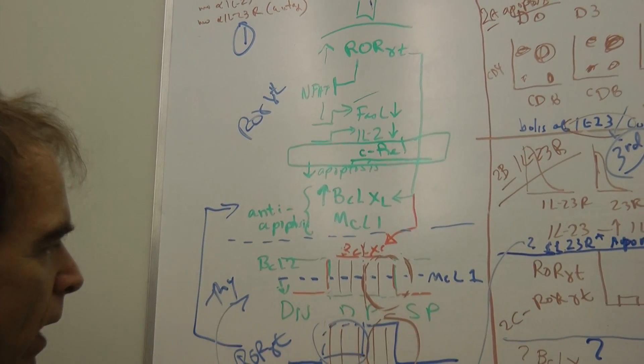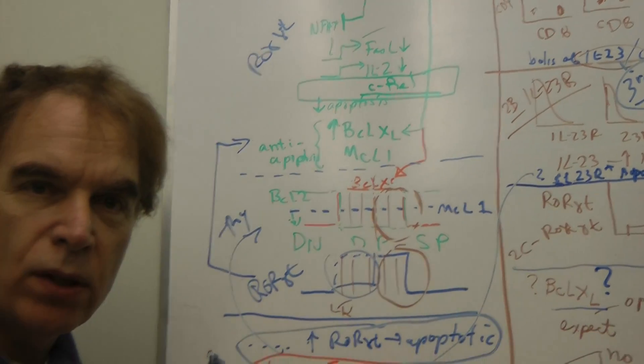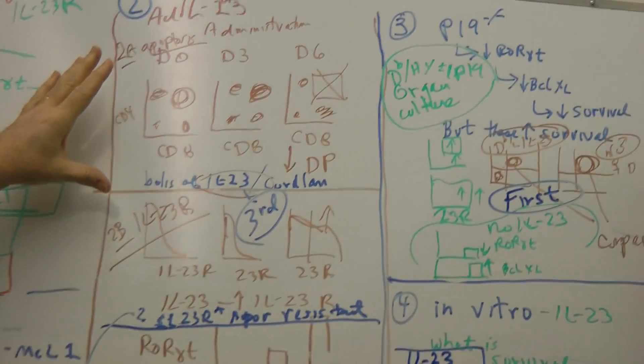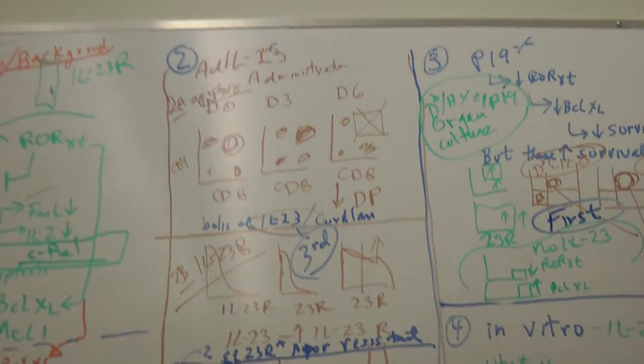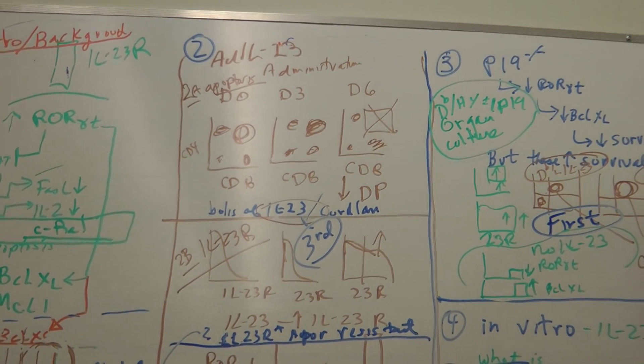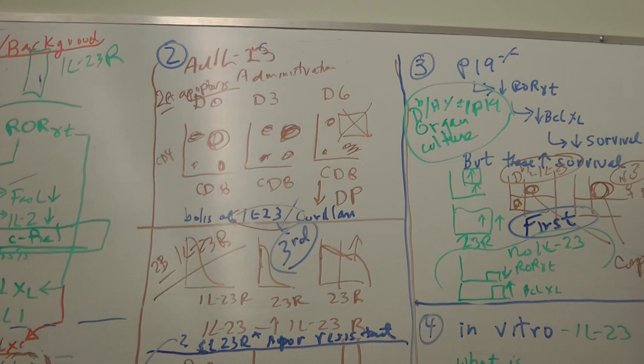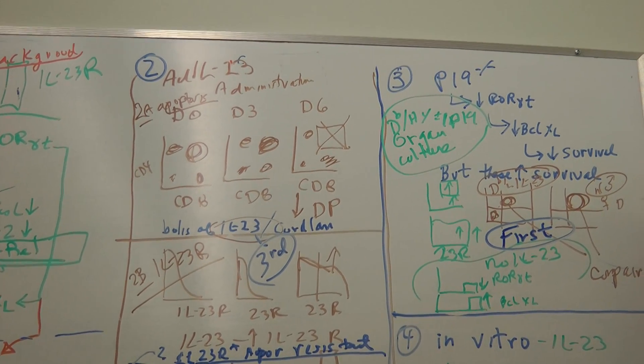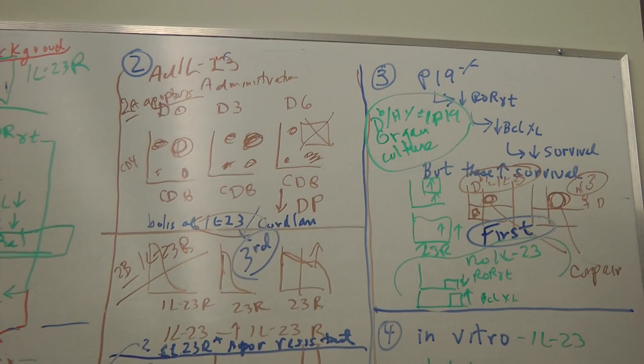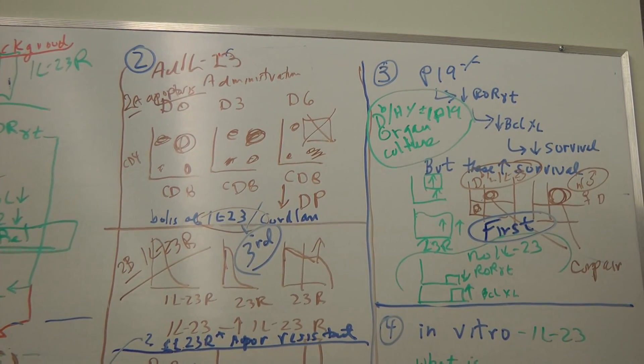And then you get the thymus apoptosis molecules. The last part of the introduction is what we found. Now let me go through what we found. Every one of these has four parts. We found that IL-23 probably causes some level of apoptosis in the thymus. And if you remove IL-23, you get a defect in negative selection. So that's the key thing.